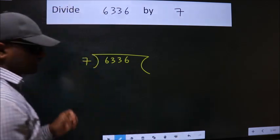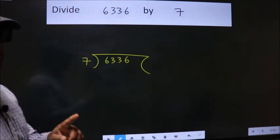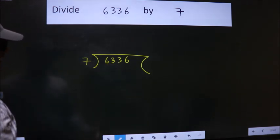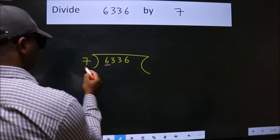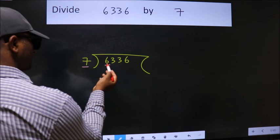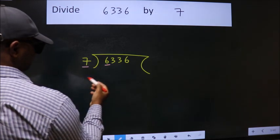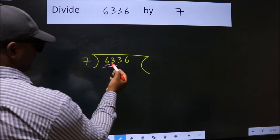This is your step 1. Next, here we have 6, here 7. 6 is smaller than 7. We should take two numbers, 63.